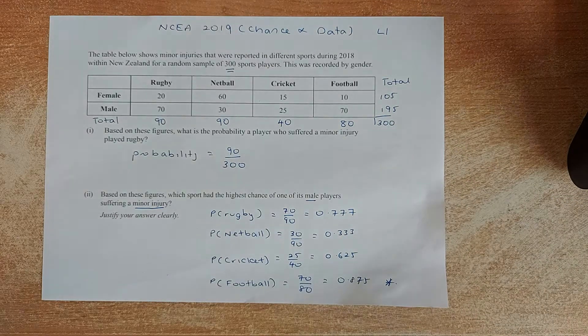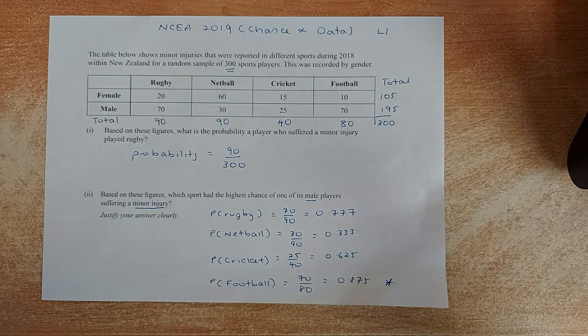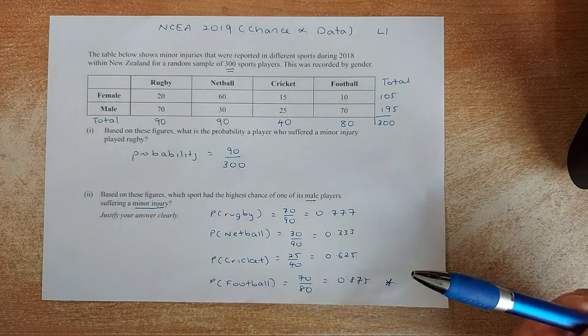Similarly, for column total, for rugby, you just add the male and female. 20 plus 70 is 90. 60 and 30 is 90. 15 and 25 is 40. 10 and 70 is 80. And the row total is also 300. So make sure you either add the row total or the column total and they will give you 300 in total. So once we have that data, we can actually calculate the probability. Very simple.